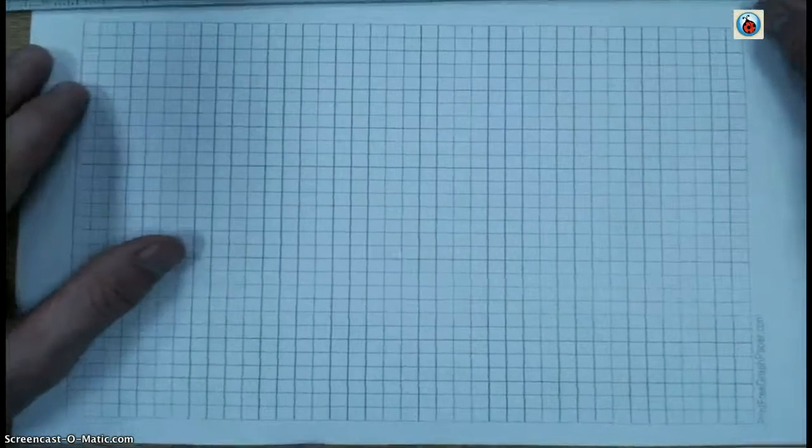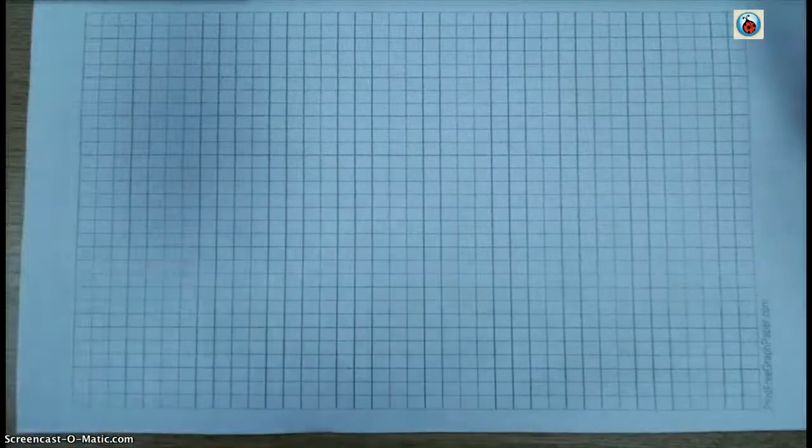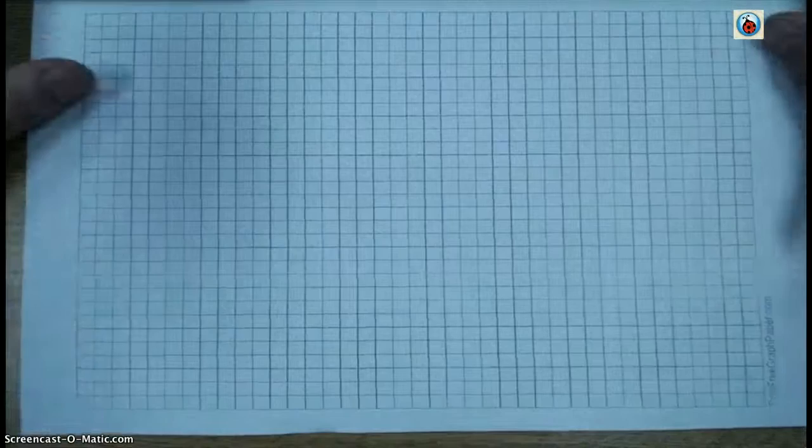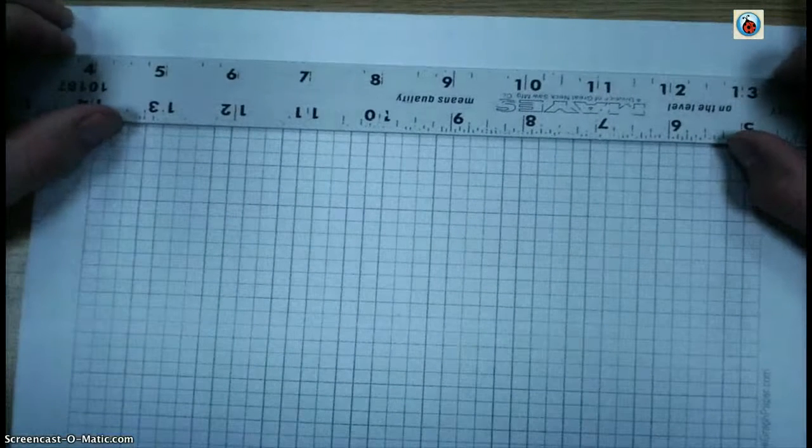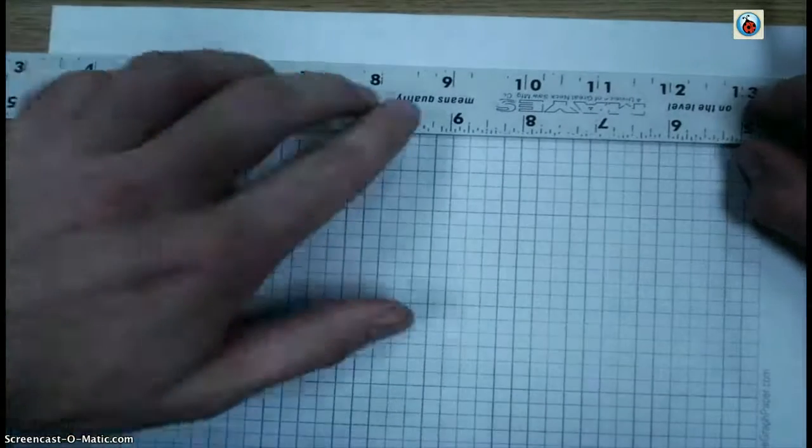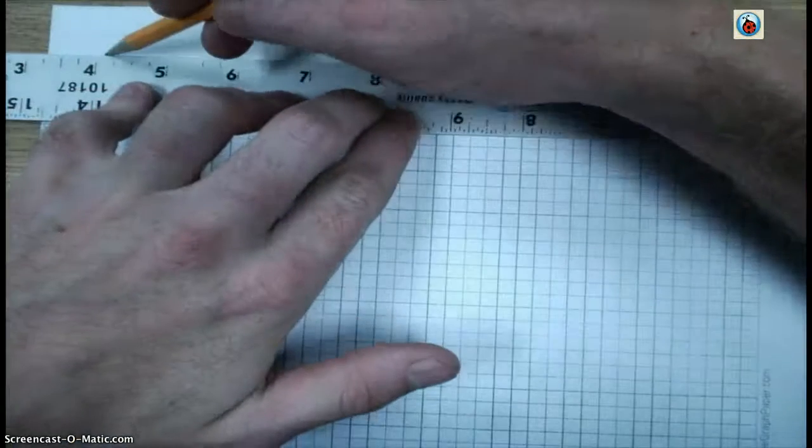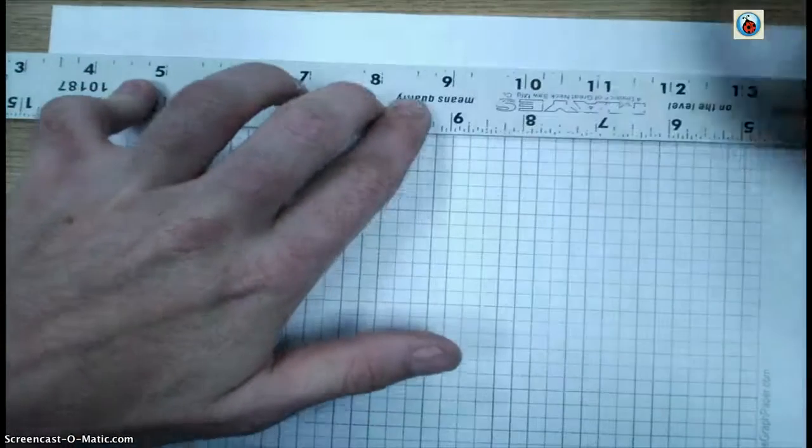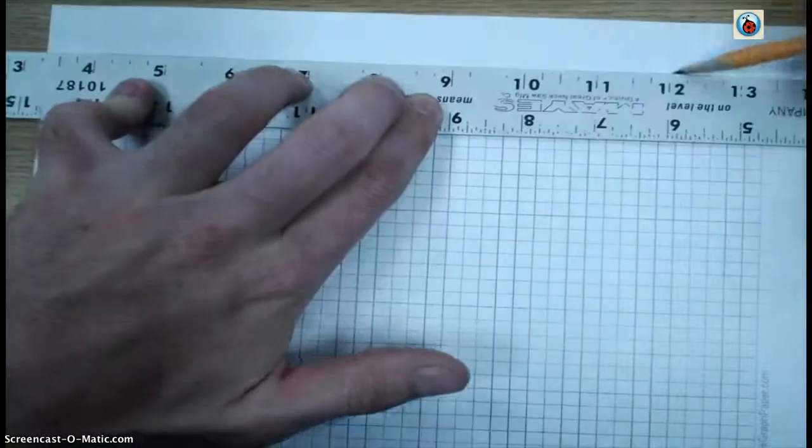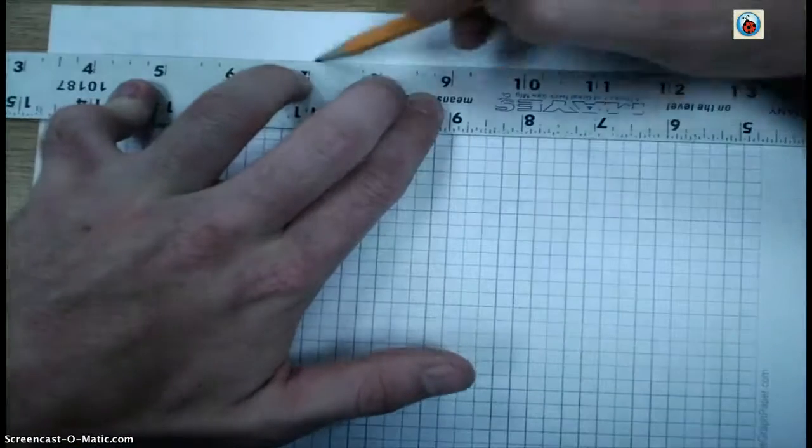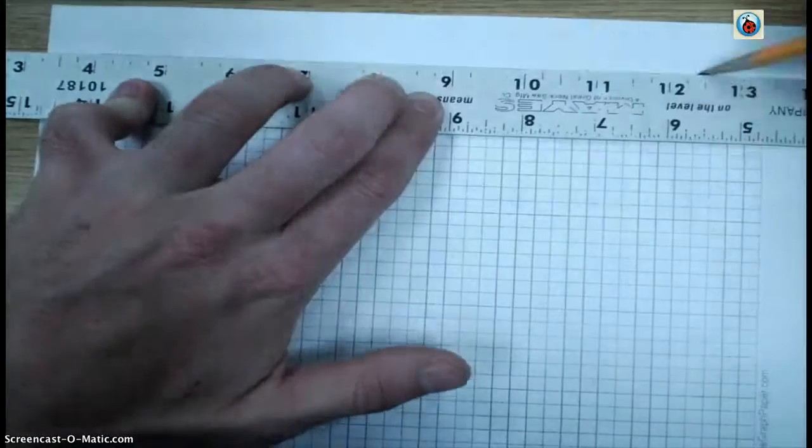First thing you need to do: set up your border and your title blocks. To set up your border, you're going to basically just outline the graph paper itself. Your border line should be your heaviest, darkest, thickest line on your paper, so you might want to go over that a couple of times.